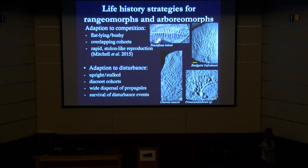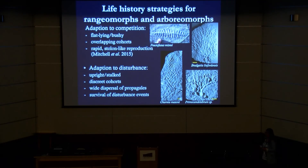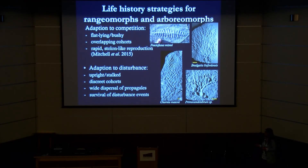For Fractifusis, the stolon-like reproduction that Emily demonstrated is really effective at rapidly colonising a surface area - taking up a lot of space and stopping other organisms from settling. In contrast, the upright and stalked forms, particularly the furled ones, seem much better adapted to disturbance.